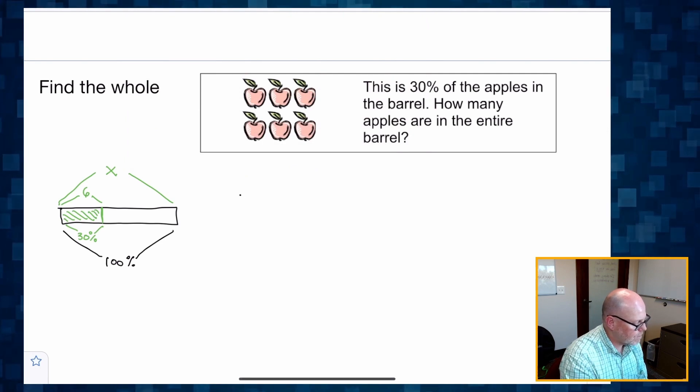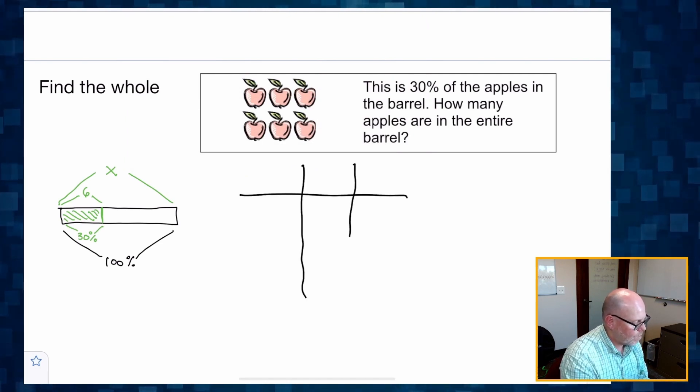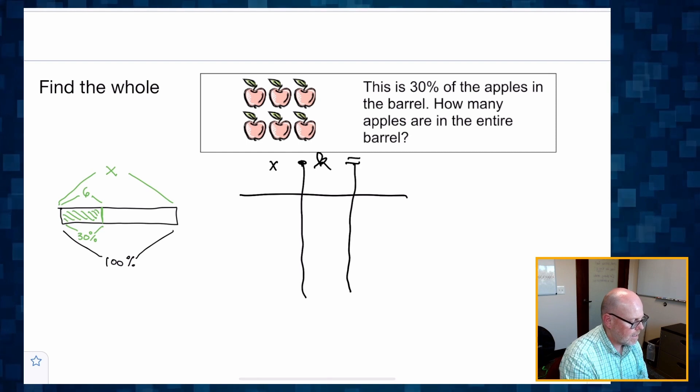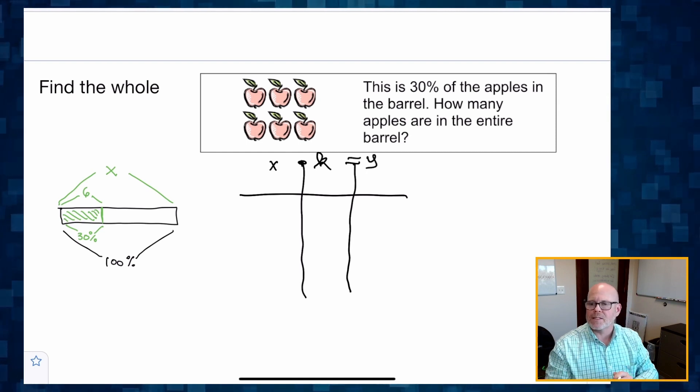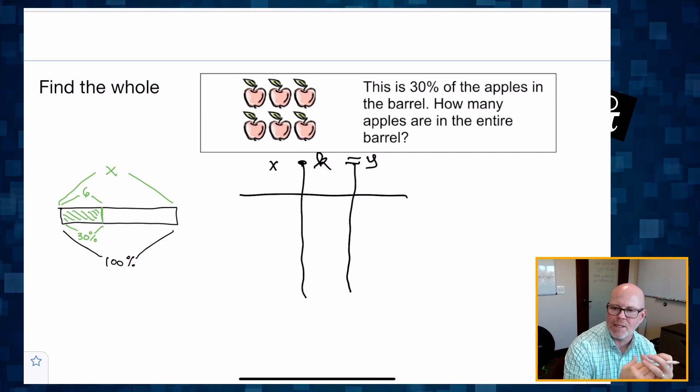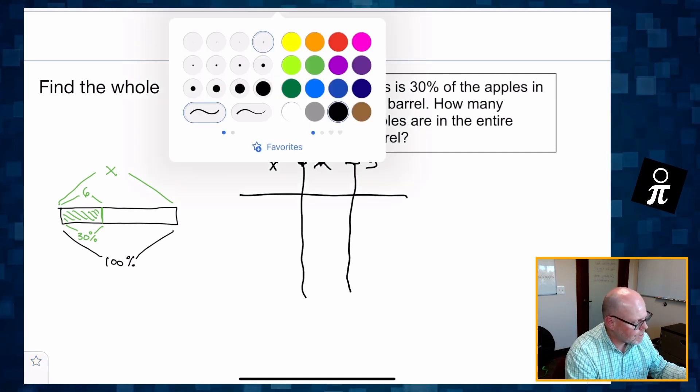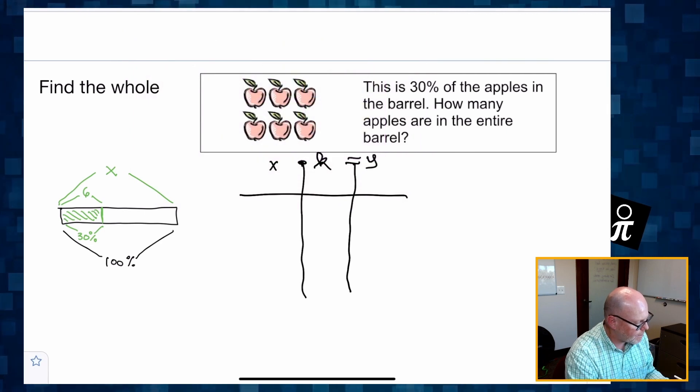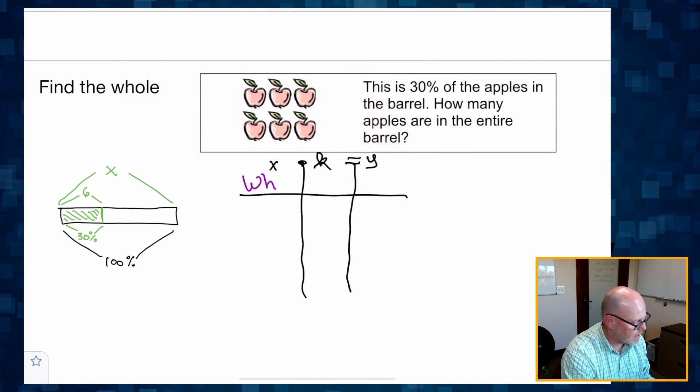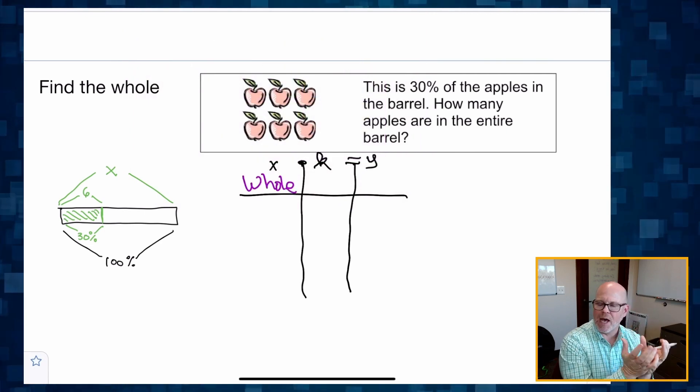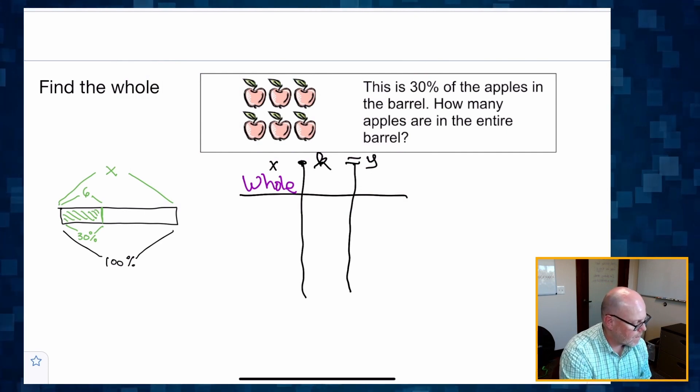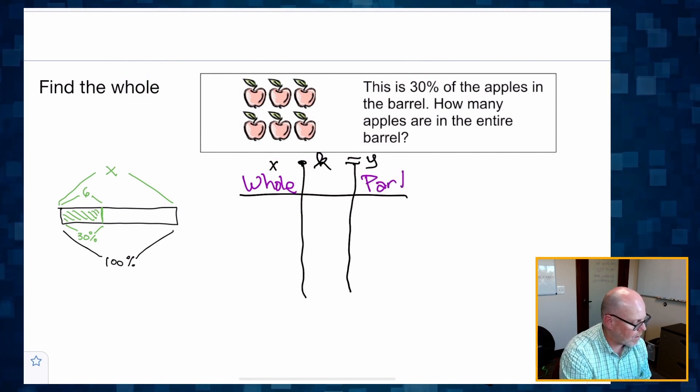And I'm going to connect that pictorial representation with a nice table. And we are going to use the X, K, Y table that we used in our proportions chapter. X times K equals Y. That's our proportion. X times the constant of proportionality is equal to Y. And because we're doing percents, a handy way to think of this is the X value as our whole, the Y value as our part.